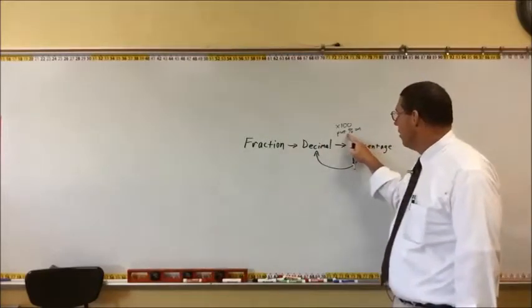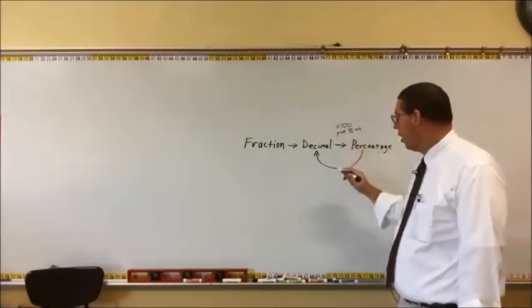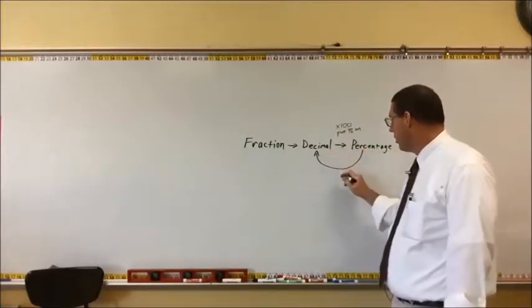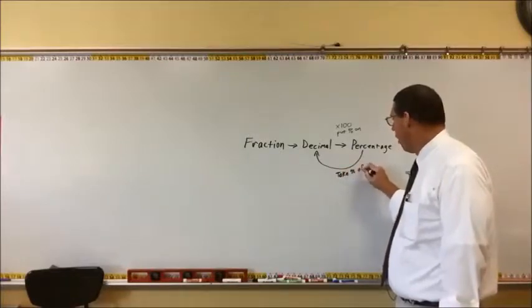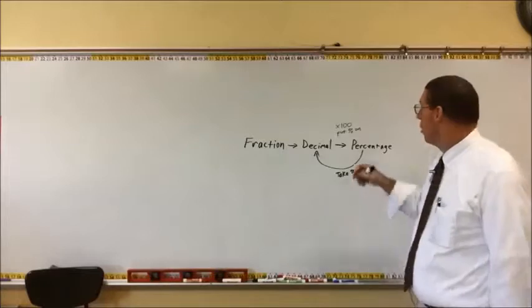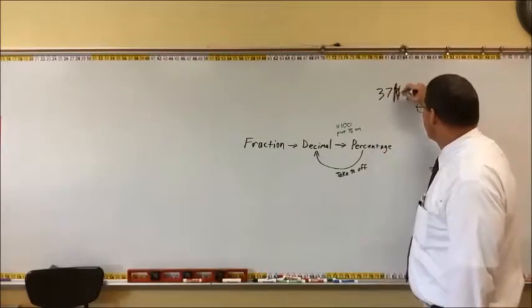You're going to go backwards. If you multiplied by 100 and put a percentage symbol on, well, to go from a percentage to a decimal, take the percentage symbol off. So 37%, get rid of the percentage symbol.